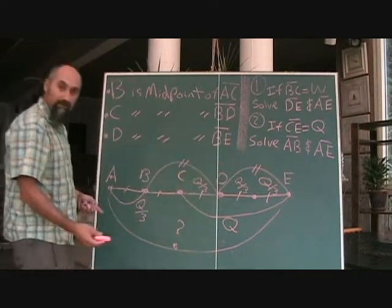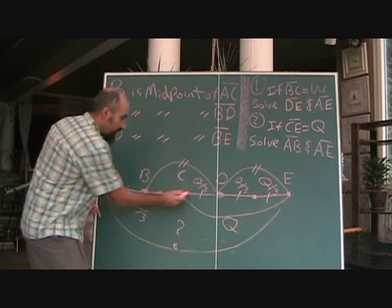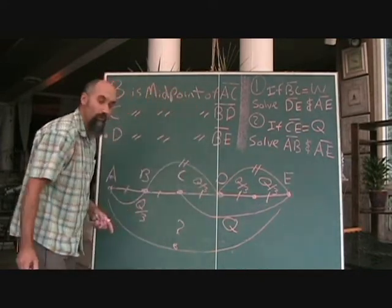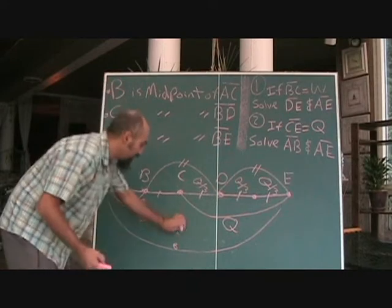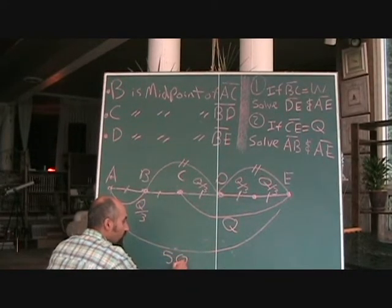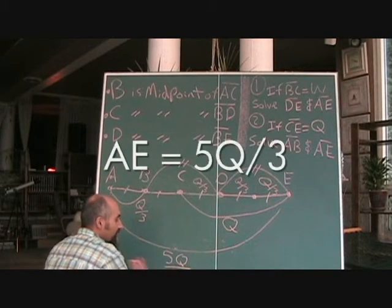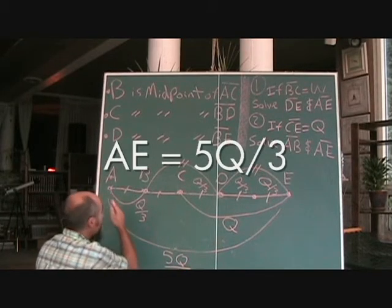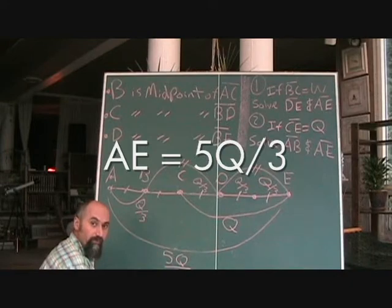Let's take a look at this. We have 1, 2, 3, 4, 5 Q's over 3. So this becomes 5 times Q over 3, which is 5Q over 3. So the length from A to E is 5Q over 3.